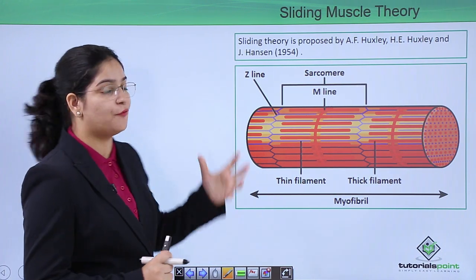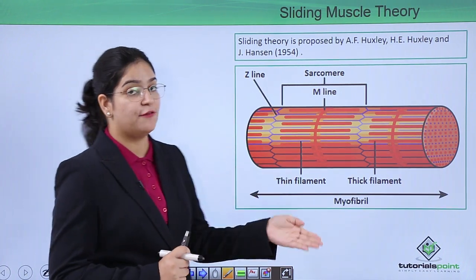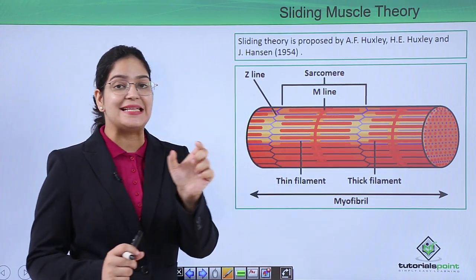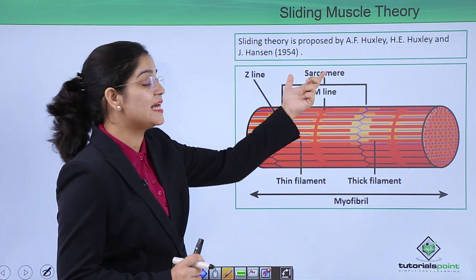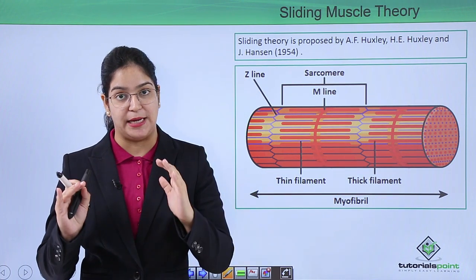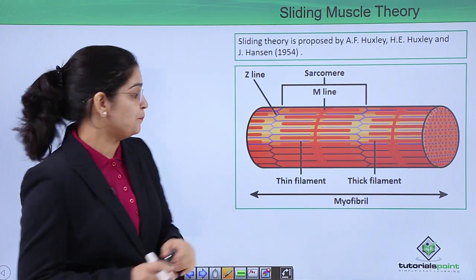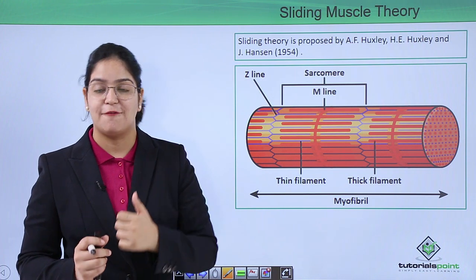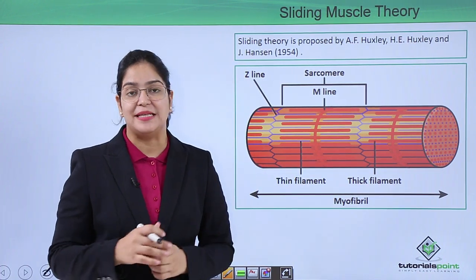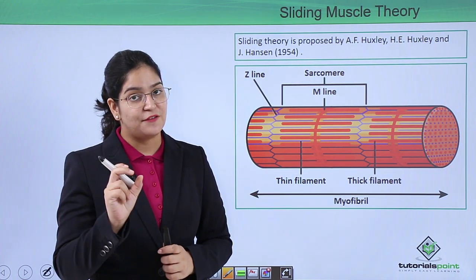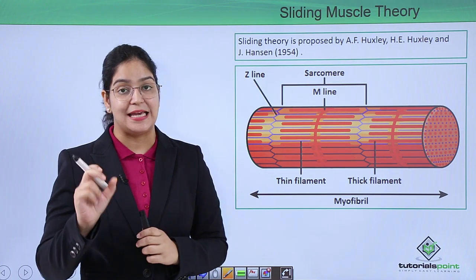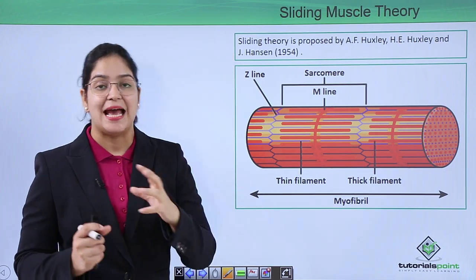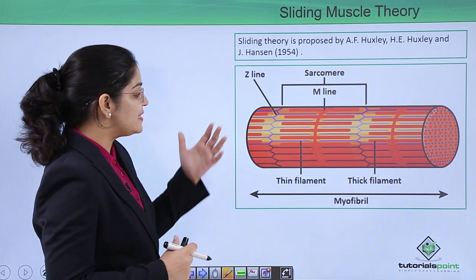If you remember the structure of the myofibril — the functional and smallest unit of a muscle — this myofibril contains a contractile unit called the sarcomere. This whole structure is made up of thin and thick filaments. The blue line shows the thin filament and the red line shows the thick filament. The thin filament is the actin protein and the thick filament is the myosin protein.